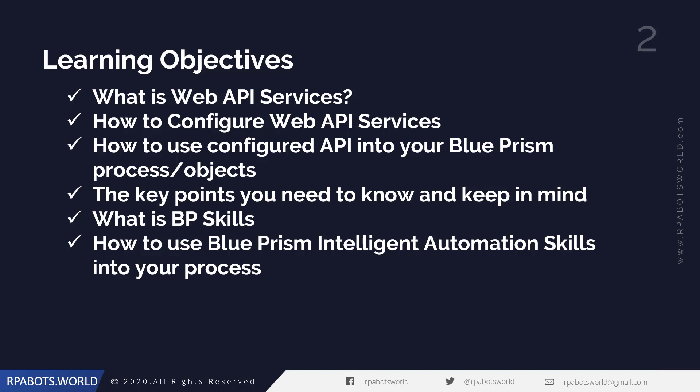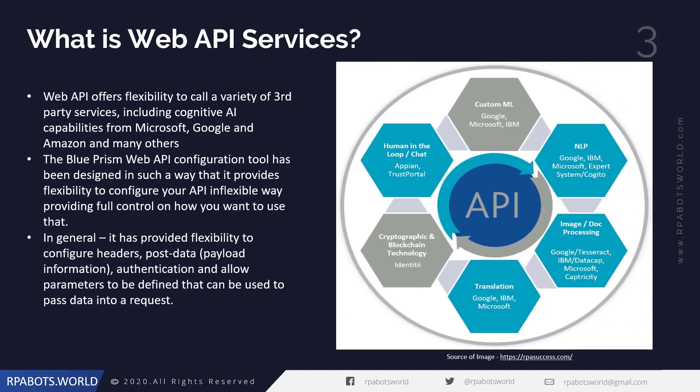So let's talk about what web API services are. You can think of web API services like a connector to third-party applications, which provides the flexibility to call and use those services through an application programming interface, so that we can use the services provided by different vendors in our application.